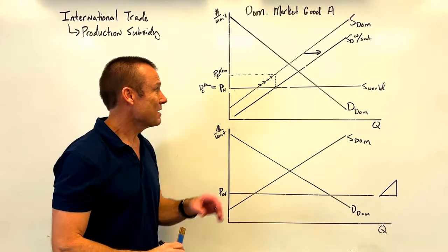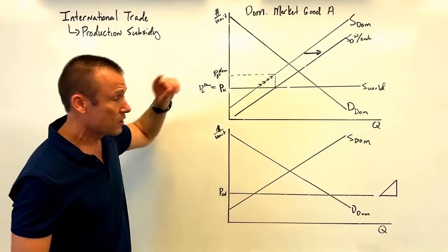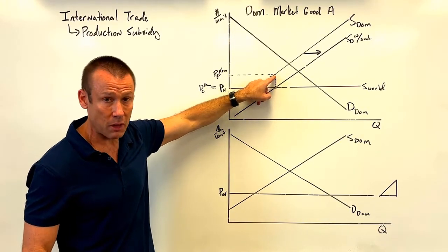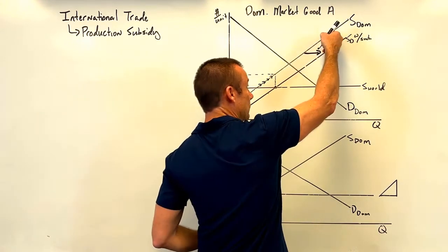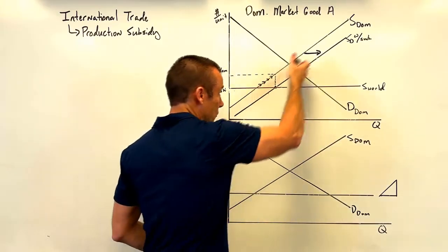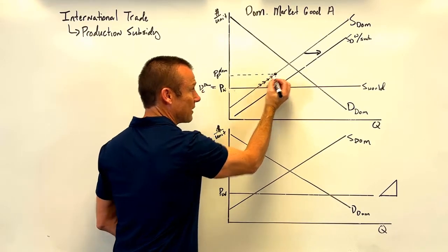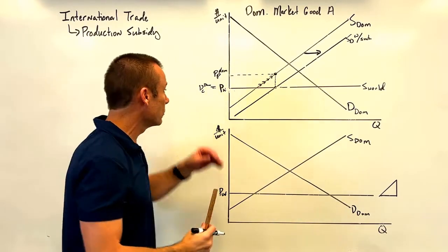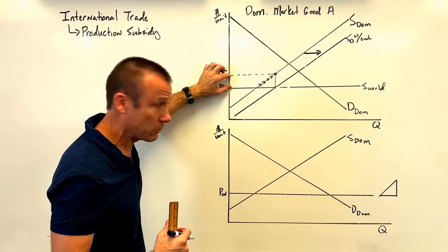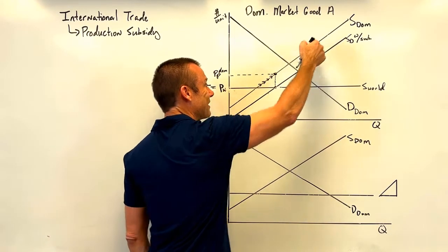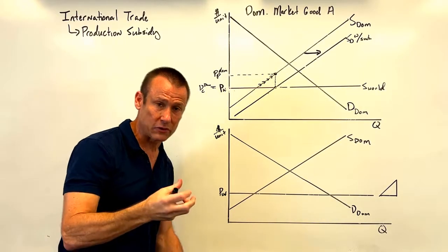When the price producer goes up, domestic producers supply more. Rather than seeing the subsidy as a reduction in marginal private cost, textbooks often switch to seeing it as an increase in per unit revenue for the producer. So they shift back to analyzing based on the original supply curve, treating the subsidy as raising the producer's effective price. This switch can be confusing, but both perspectives lead to the same result.